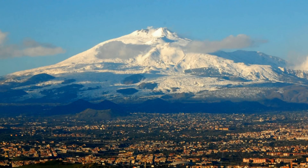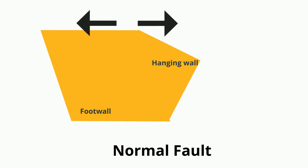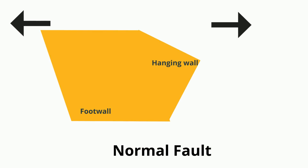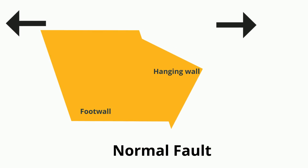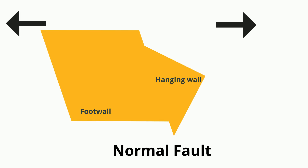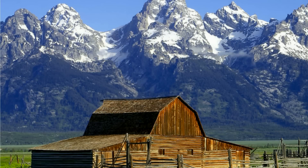Fault block mountains form when tension causes the lithosphere to break into normal faults. At normal faults, the lithosphere drops down, and the pieces left standing form fault block mountains. The Teton Mountains and the Sierra Nevadas are examples.